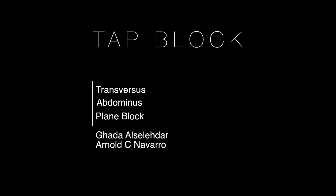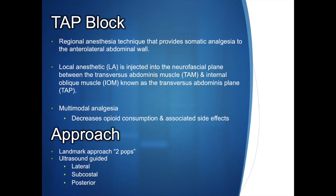The transverse abdominus plane block, also known as the TAP block, by Gata El-Selectar and Arnold Navarro. The TAP block is a regional anesthesia technique that provides somatic analgesia to the anterior lateral abdominal wall. Local anesthetic is injected into the neurofascial plane between the transverse abdominus muscle (TAM) and the internal oblique muscle (IOM), known as the transverse abdominus plane (TAP), hence the name TAP block. It is a unilateral peripheral nerve block that can be done bilaterally, depending upon the surgical procedure, such as laparoscopic procedures or those with a midline incision.